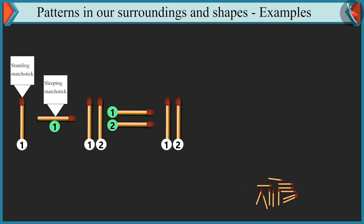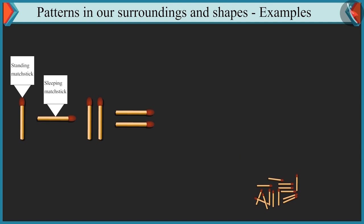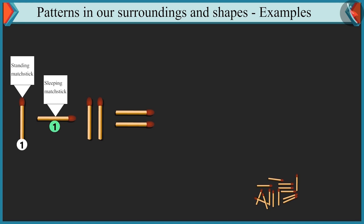Next, it will be two standing matchsticks and two sleeping matchsticks again. Not like that, Chutki. Look at this pattern a little more carefully. First, there is one standing matchstick and then one sleeping matchstick. Next, there are two standing matchsticks and two sleeping matchsticks. It means the number of matchsticks is increasing by one each time.